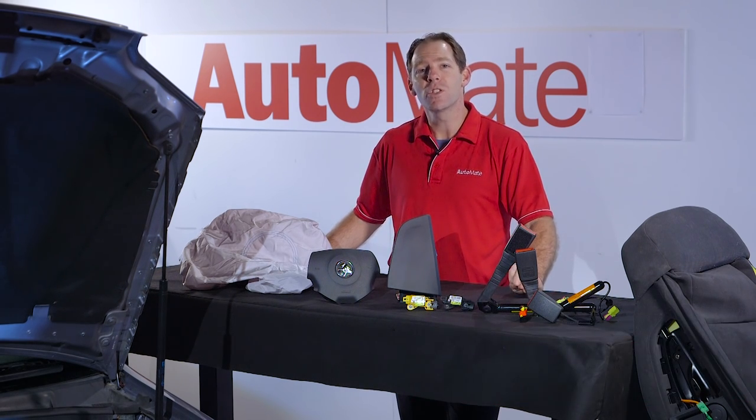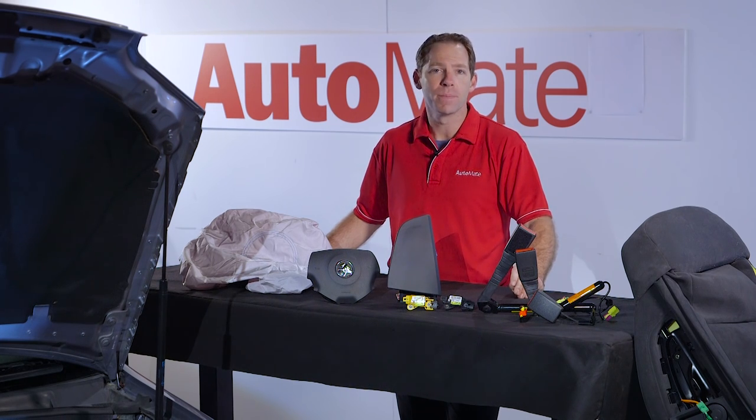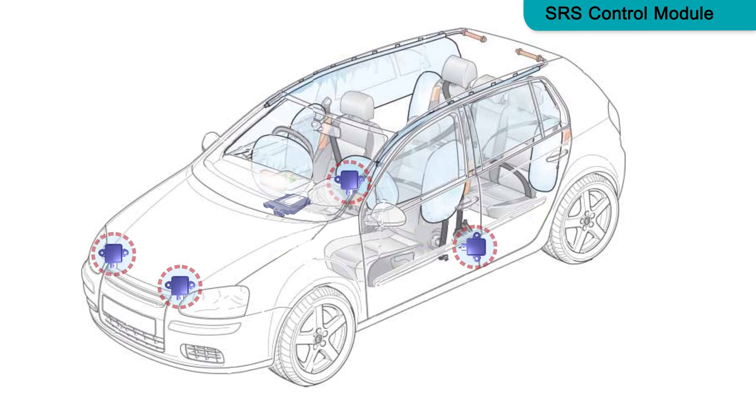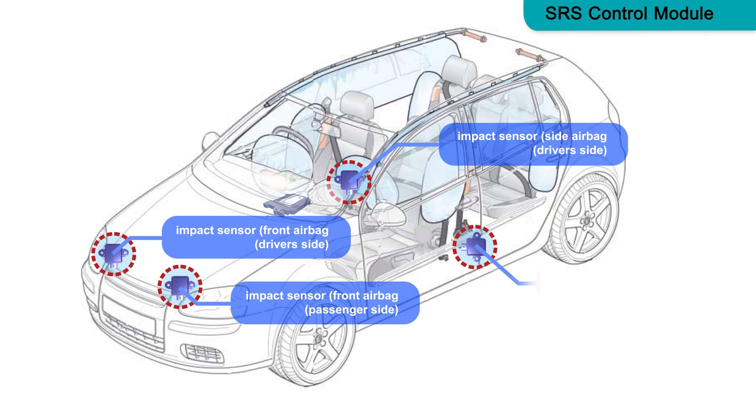The airbag was designed to supplement already installed seatbelt restraint systems. The SRS module determines the severity of a collision with the assistance of impact sensors located at strategic points on the vehicle.